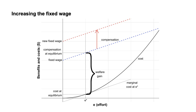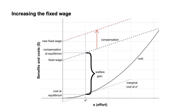Suppose the firm decided to increase the fixed portion of Erica's wage. This does not change Erica's optimal level of effort, as the marginal benefit and cost remain equal at the same level of effort. As a result, the firm's profit would drop. The firm could, however, increase the share of the output it pays to Erica. This increases the slope of the line for compensation. The marginal benefit of an extra unit of effort will now equal the marginal cost at a higher level of effort, so Erica's effort increases. Whether the firm is willing to do this depends on the profit-maximising level of effort and compensation.